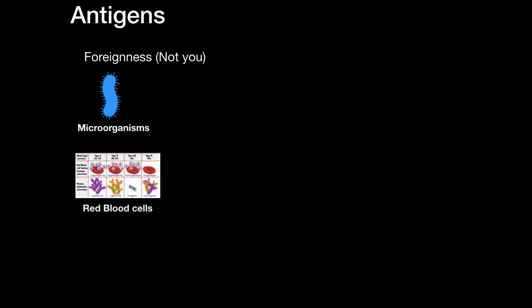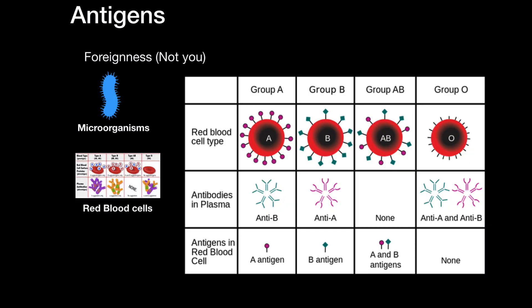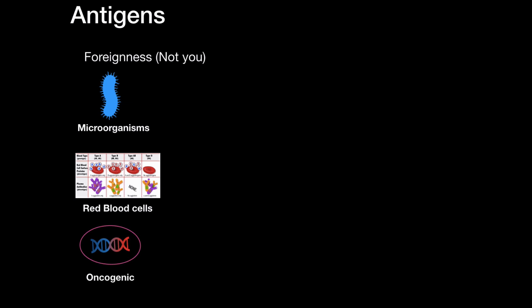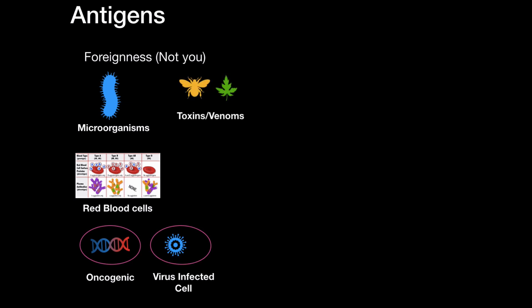Antigens can also be red blood cells. For example if you're type A, meaning you have A antigens on the surface of your red blood cells, and you give blood to a type B person — who has B antigens on the surface but antibodies against A — that will cause an immunological reaction because their antibodies will bind to your red blood cells. Oncogenic cells, meaning cancerous cells mainly, can also be a target for your immune system, and they can be differentiated by their MHC class 1 complex. The same goes for virus-infected cells. Toxins and venoms from animals and plants can also trigger our immune response.